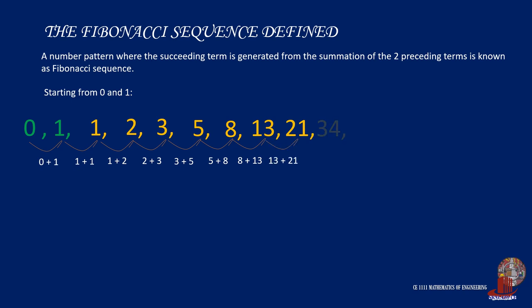Now, 13 plus 21 is 34. 21 plus 34 is 55. Then again, 34 plus 55 is 89. 55 plus 89 is 144. And 89 and 144 turns as 233. Then the process goes on.